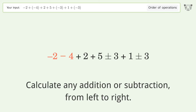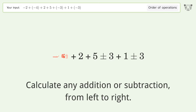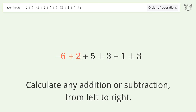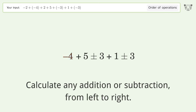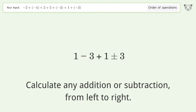Negative 2 minus 4 equals negative 6. Negative 6 plus 2 equals negative 4. Negative 4 plus 5 equals 1. Minus plus minus: 1 minus 3 equals negative 2.